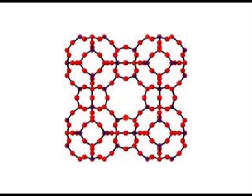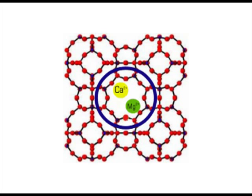Zeolite is used in washing powders due to its water softening characteristics. The compound structure has large holes that capture and contain calcium and magnesium found in our water supply, thereby softening the water and making the washing process more efficient. But just how is this complex compound actually made?